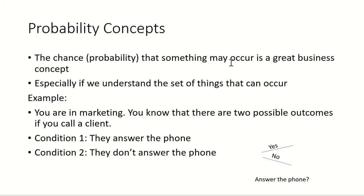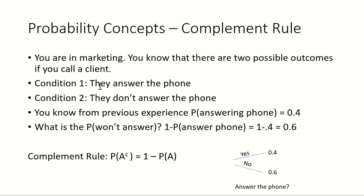You will remember this, hopefully, from your stats class. The point being made here is that if you can determine the potential outcomes, then we start moving into a good place for probability. So let's say you're in marketing. You know that there are two possible outcomes if you call a client: one option is they answer the phone, and the other option is they don't answer the phone. We're beginning to put together this big idea of what outcomes could happen in business.